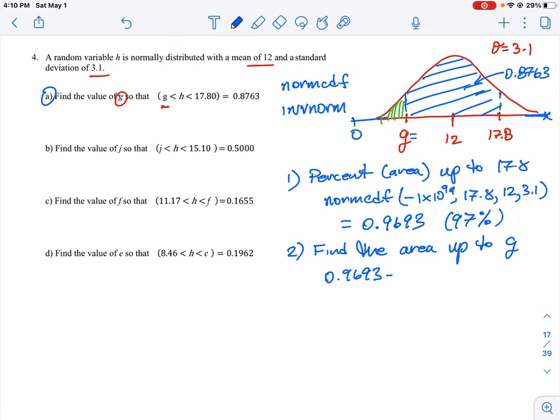And we know the chunk between g and 17.8 is given by 0.8763. So if we were to subtract these two numbers, 0.8763, that would be the part that we see shaded in green.